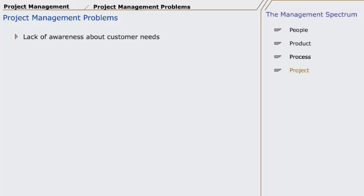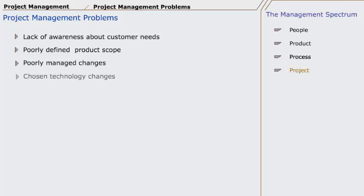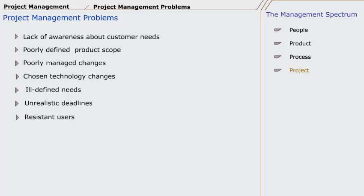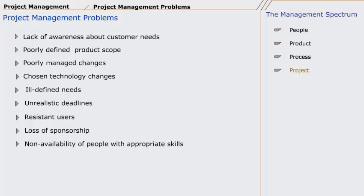A few of the most common problems are: 1. Software people do not understand their customers' needs. 2. The product scope is poorly defined. 3. Changes are managed poorly. 4. The chosen technology changes. 5. Business needs change or are ill-defined. 6. Deadlines are unrealistic. 7. Users are resistant. 8. Sponsorship is lost or has not been properly obtained. 9. The project team lacks people with appropriate skills.